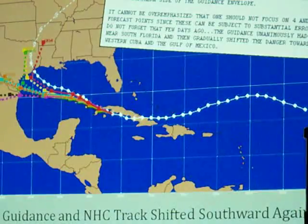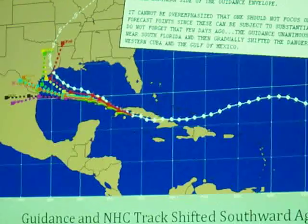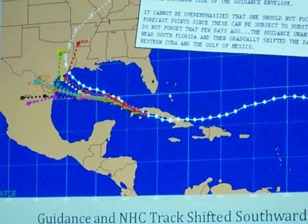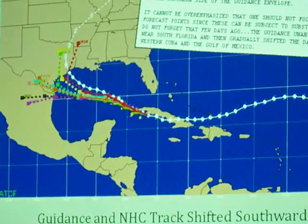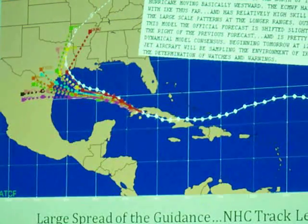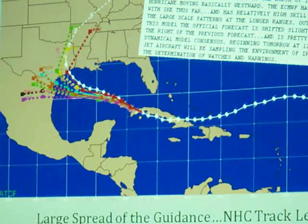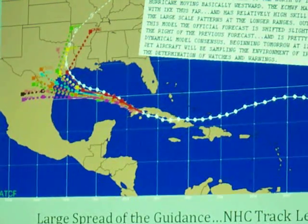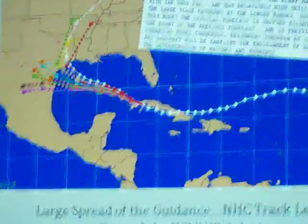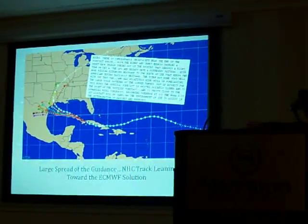Going forward another cycle, there's a dichotomy in the tracks: at least two or three models say the track will be farther north near Houston — where it verified — but many more point south. Because the consensus moves south, our track moves south. Next cycle, still a very large spread in the guidance. The UKMET is so far right that the hurricane center track is leaning toward the European solution. We might have shifted it ever so slightly to the right, but in general the track is south of where it needs to be at this point.